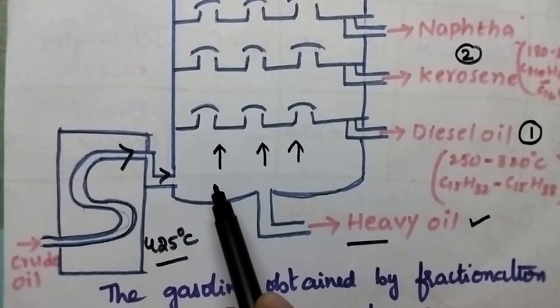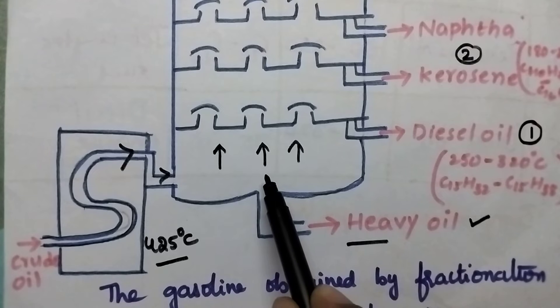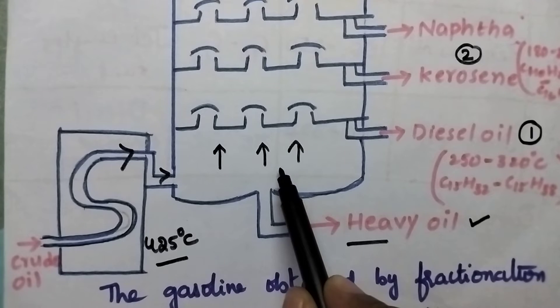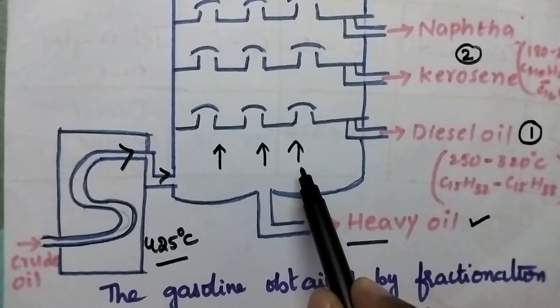Whenever they enter into the fractionating column, they will move in upward direction. Initially, the temperature of the crude oil vapors will reduce slowly.